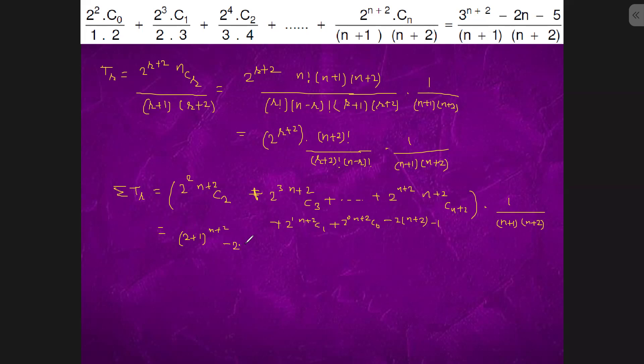minus 2n minus 5 upon n plus 1 into n plus 2. This is the solution.